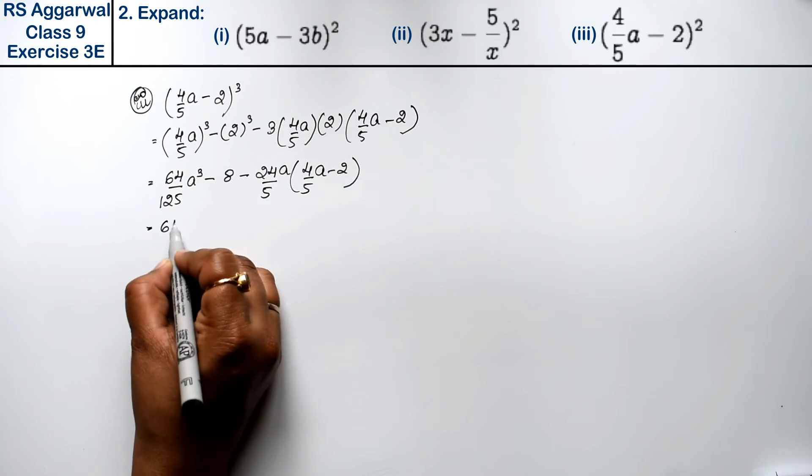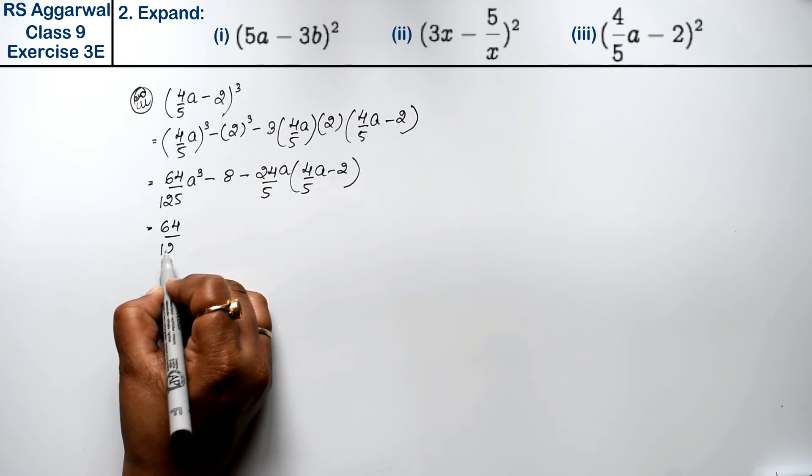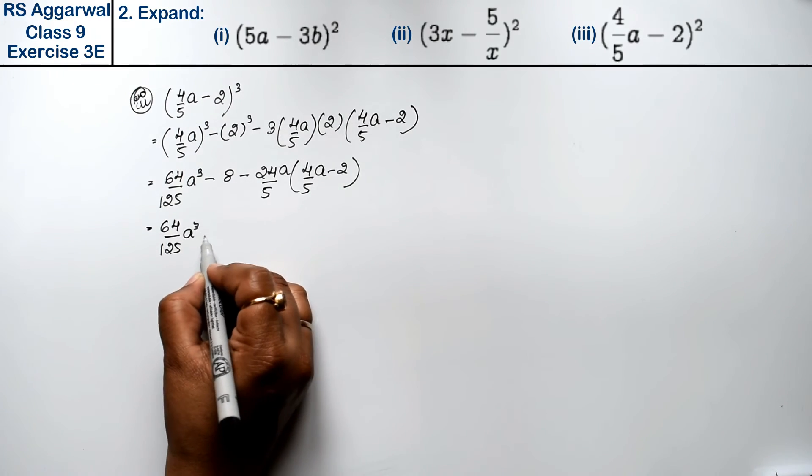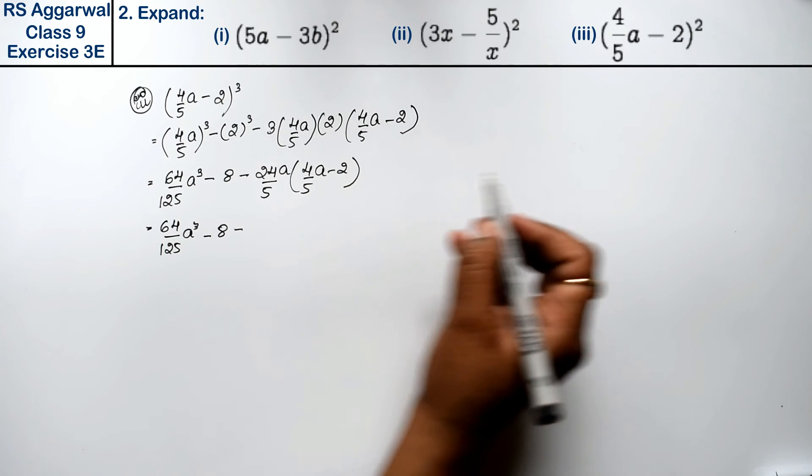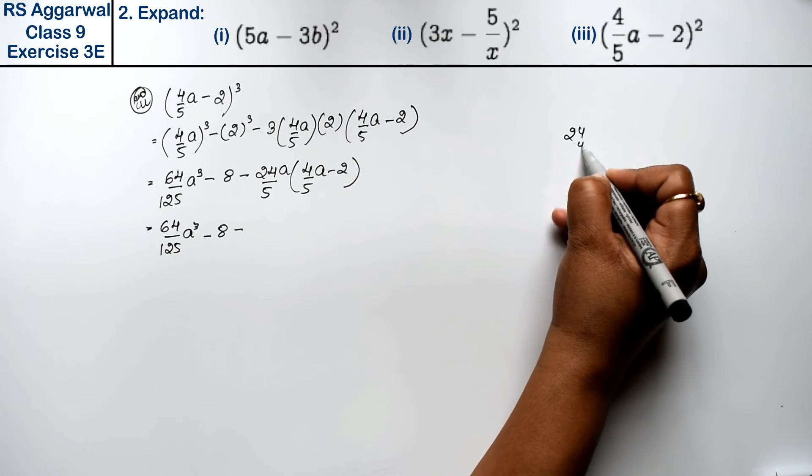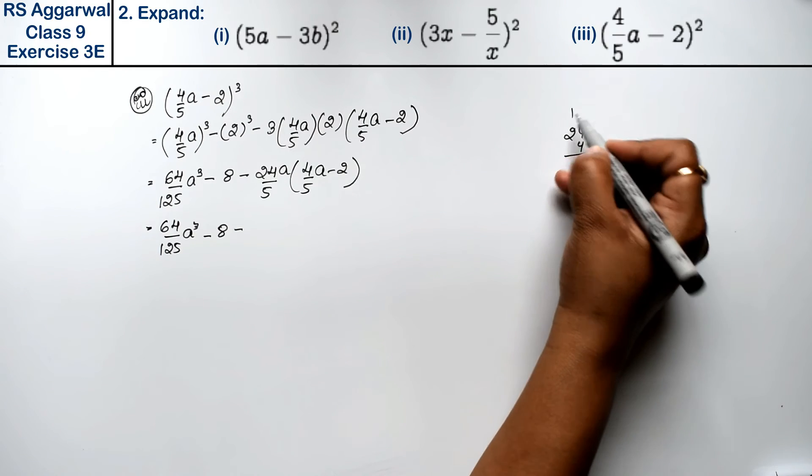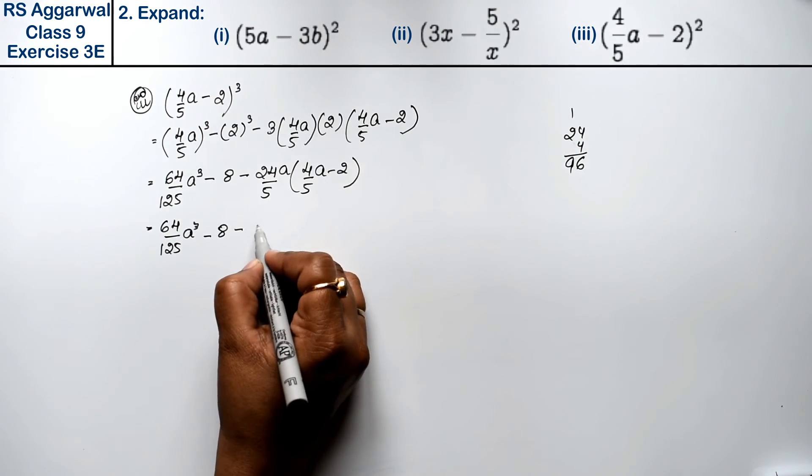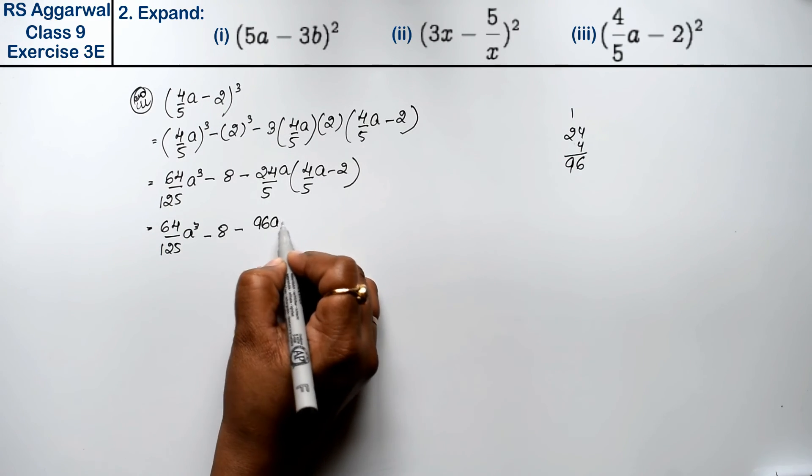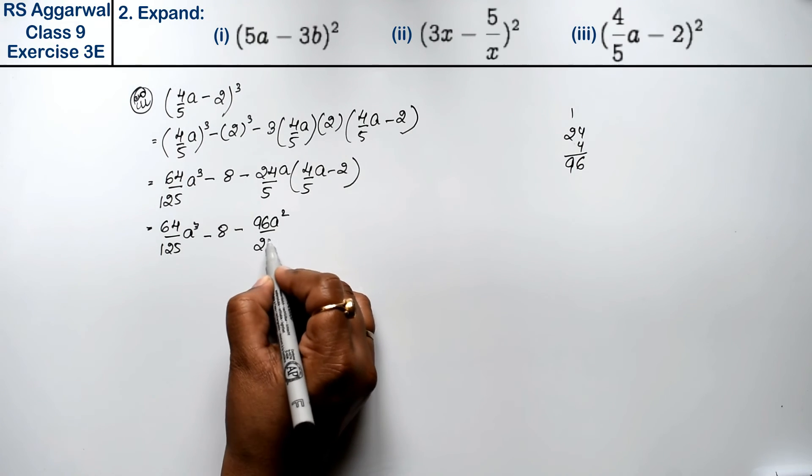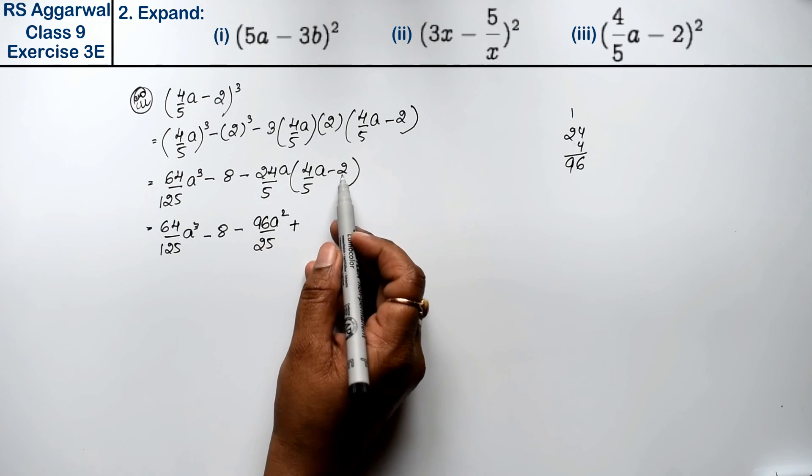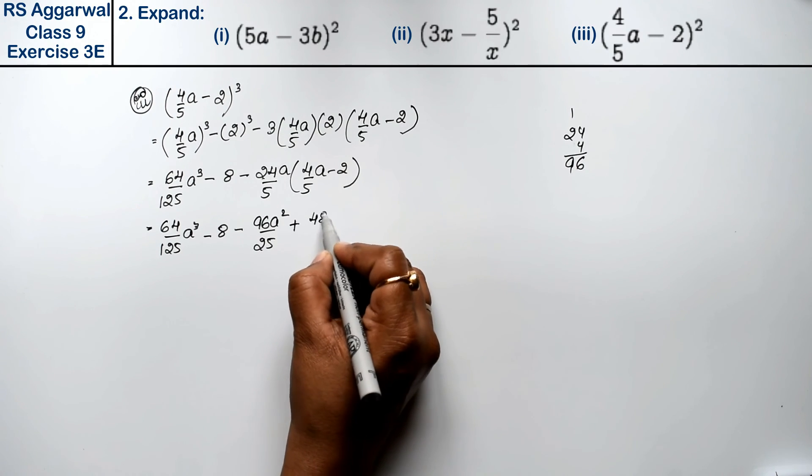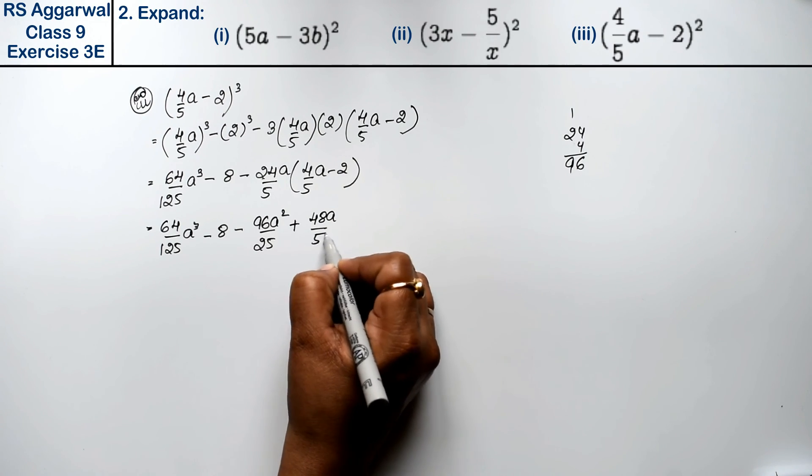Ab dekhiye: 64/125a³ minus 8 minus 24×4 is, 4×4 is 16, 4×2 is 8 and 96a²/25 minus minus plus 24×2 is 48a/5 is the answer.